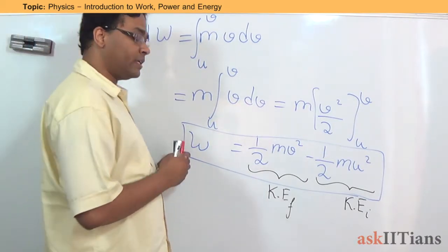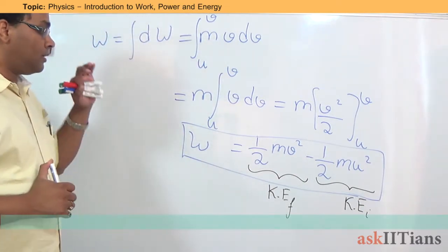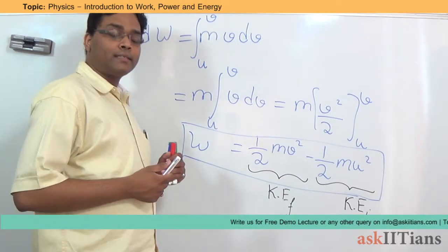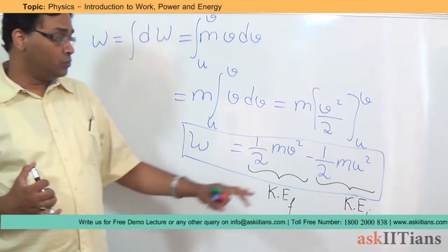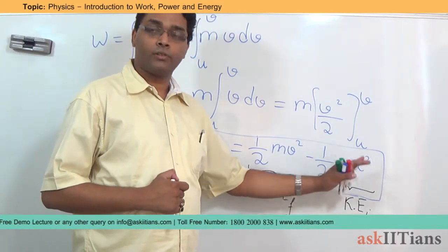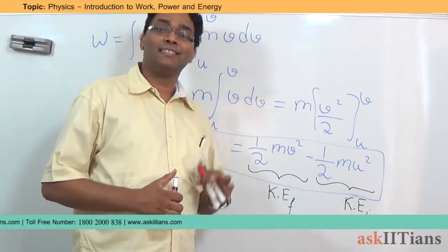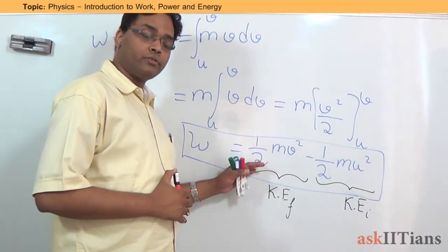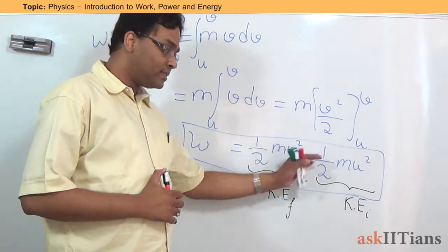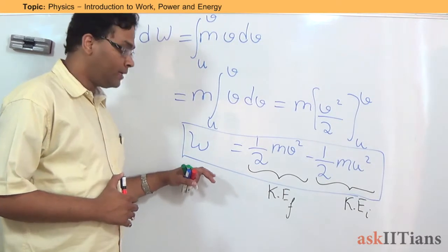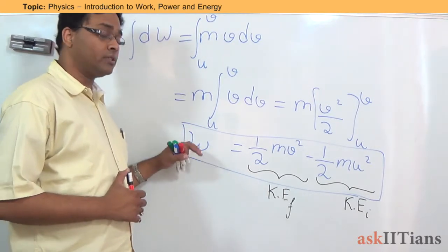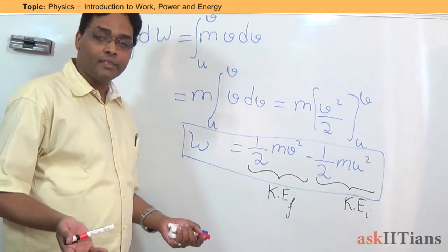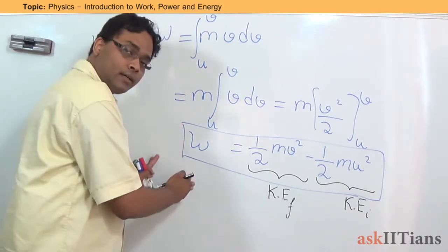Let me now explain the physical implication of this. When you apply an external force on any object, if it is moving with some initial speed u, it will have kinetic energy because of that. When you apply the force, there is going to be a change in its velocity. If that change in velocity results in a new kinetic energy, the difference in kinetic energy is equal to the amount of work that has been put in. So this work results in a change in kinetic energy — that is what is known as the work-energy theorem.